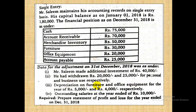Depreciation on furniture and office equipment — dono given hain — yeh dono hamare expenses hain, inhe hum profit and loss mein expenses mein show karenge. Outstanding salaries, that means salaries payable at the year end, is Rs. 10,000. Kyunki yeh outstanding expense hai, yeh bhi expenses mein jayega. Agar balance sheet required hoti to yeh salaries payable ke taur pe liabilities mein bhi jata.